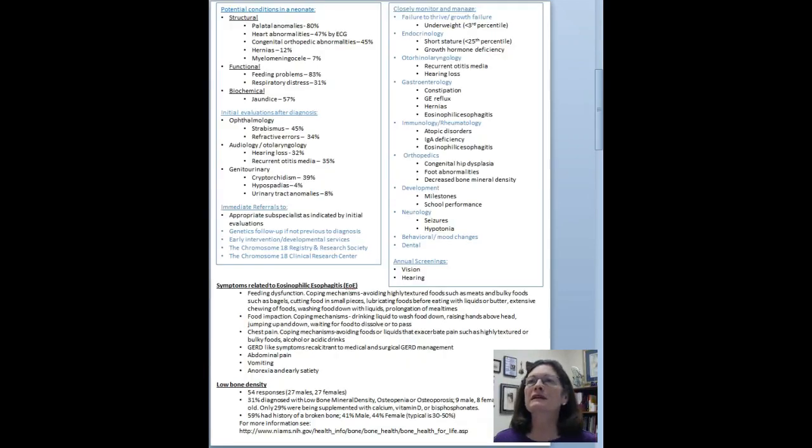The next page, I hope, is self-explanatory. This really just comes from the management guide, so everybody would have a copy of that. These are the potential conditions to look for in a neonate. So when a baby is born with Tetrasomy 18P, this is what the doctors might look for. When you have an initial diagnosis, these are the evaluations that need to be done and referrals that need to be made. And then as they get a little older, these are the conditions on the right that you want to have monitored by your physician.